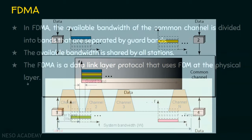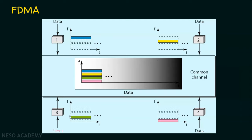Let's see an example of FDMA. Suppose there are four stations — Station 1, Station 2, Station 3, and Station 4 — and each station is generating data. This is the common channel, and the entire bandwidth is broken into user bands. Since four stations are participating, four bands are created, and we also have a guard band to protect from overlapping. All four stations' data are transmitted at the same time. The blue data is from Station 1, yellow from Station 2, green from Station 3, and pink from Station 4. Each user band is assigned to its respective station, so multiple stations transmit their data simultaneously without collision or overlapping.